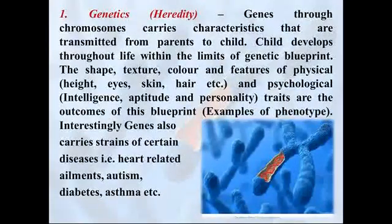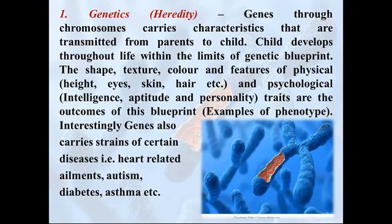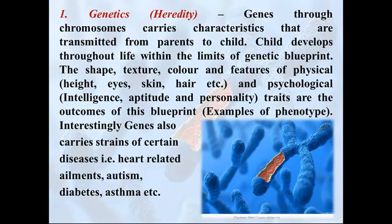The first factor is genetic or hereditary factors. Genes through chromosomes carry characteristics that are transmitted from parents to child. These characteristics can be psychological as well as physical. A child develops throughout life within the limits of the genetic blueprint inherited from both parents in the form of chromosomes and genes. Physical traits include the shape of your body, texture of your skin, colour of your eyes, hair and features — height, eyes, etc. Psychological traits include intelligence, aptitude, personality, creativity, and curiosity — all outcomes of this blueprint.